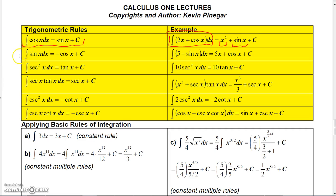The integral of sine x dx equals minus cosine x plus a constant. Recall that the derivative of cosine x is minus sine x, so the derivative of minus cosine x is plus sine x, confirming this rule. For example, integrating 5 plus sine x dx gives 5x minus cosine x plus a constant, where the minus comes from the integral of sine x.